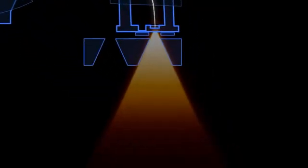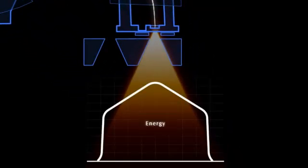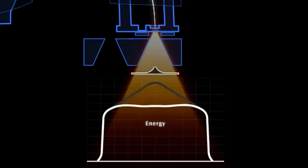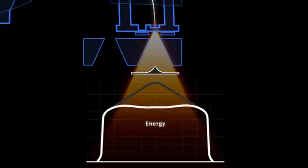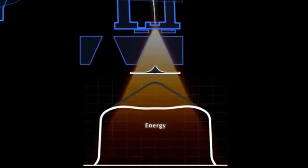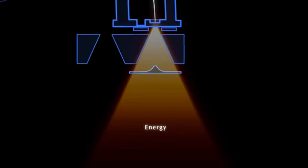At this stage, the photons are not uniformly distributed across the beam, and so a flattening filter is placed in the path of the beam. The cone-shaped filter absorbs more photons from the center of the beam than from the sides, creating a uniform photon beam.